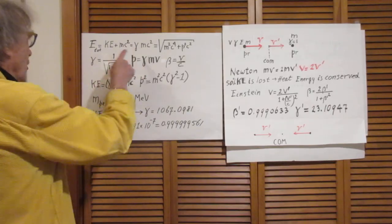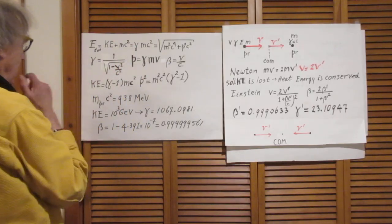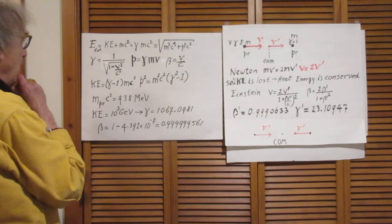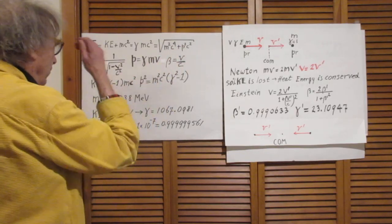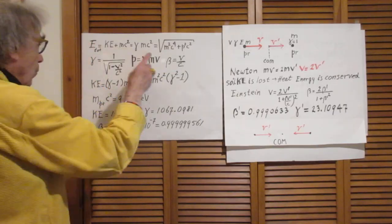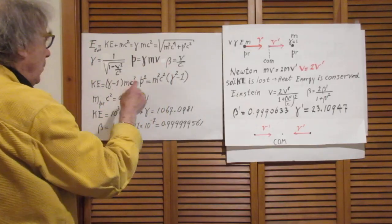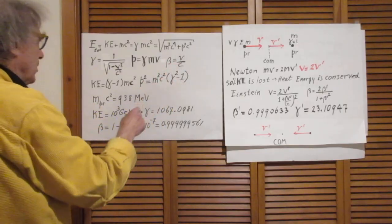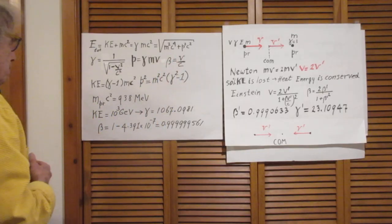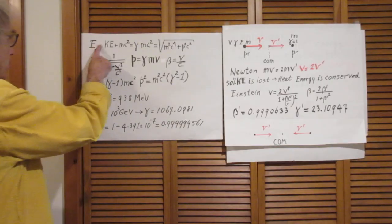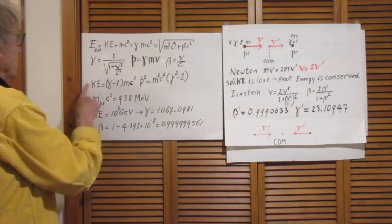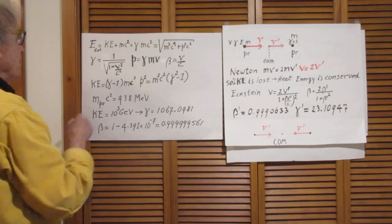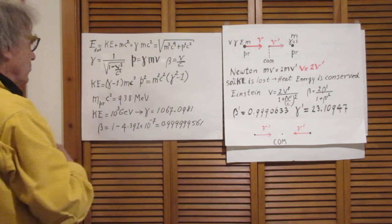Gamma is the Lorentz factor which is given by this quantity and the momentum P is γMV. We often use beta in these equations which is V over C, just for simplicity. It follows immediately from this that the kinetic energy, in our case that is 1000 GeV, is (γ - 1) times mc².